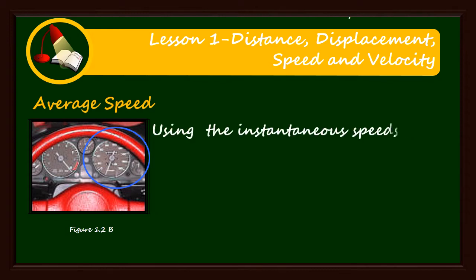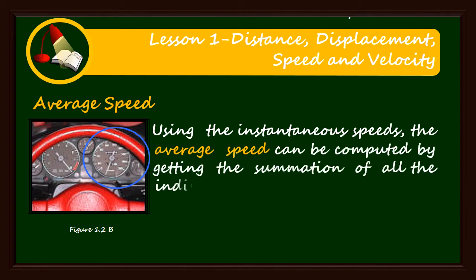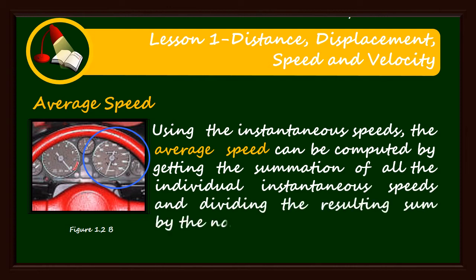Using the instantaneous speeds, the average speed can be computed by getting the summation of all the individual instantaneous speeds and dividing the resulting sum by the number of instantaneous speeds.